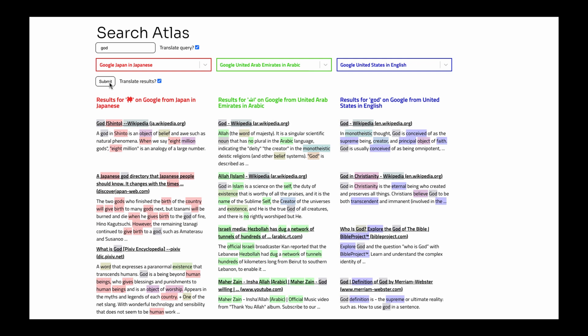It highlights the most distinctive words in the results for each location and language pair. The more often a word appears in each list of results, the stronger its color as a mixture of red, green, and blue.